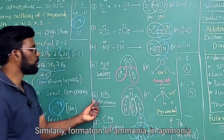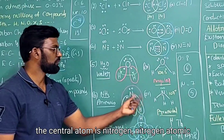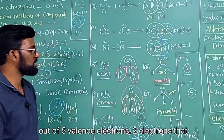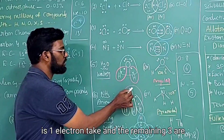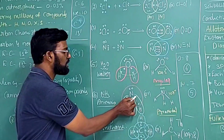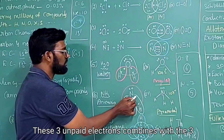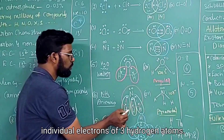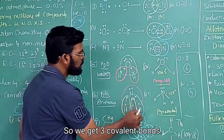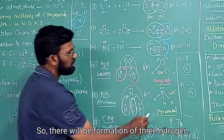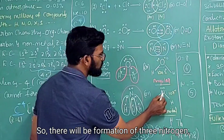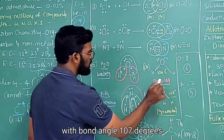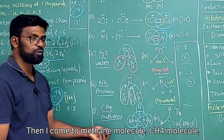For the formation of ammonia (NH₃), the central atom is nitrogen, which has five valence electrons — one lone pair and three unpaired electrons. These three unpaired electrons combine with three individual electrons of three hydrogen atoms, forming three covalent bonds — three nitrogen-hydrogen bonds. The molecule has a pyramidal shape with a bond angle of 107 degrees.